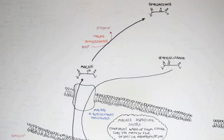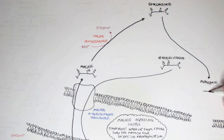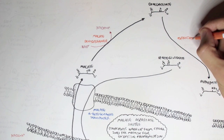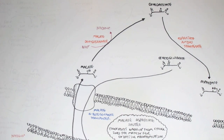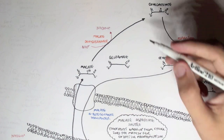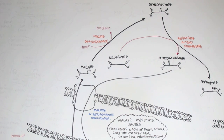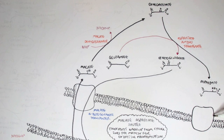This malate-aspartate shuttle doesn't end there, because we haven't talked about aspartate yet. Oxaloacetate can then convert to aspartate with the enzyme aspartate aminotransferase. Aspartate is a non-essential amino acid. Another amino acid, glutamate, essentially donates an amino group to oxaloacetate to produce aspartate, and glutamate converts to alpha-ketoglutarate in the process.